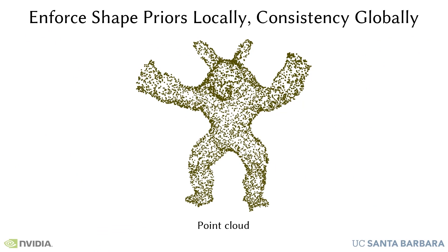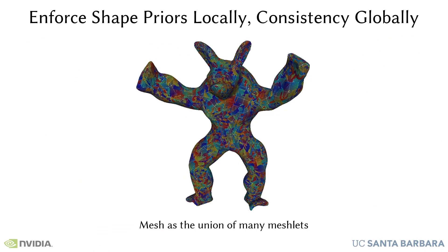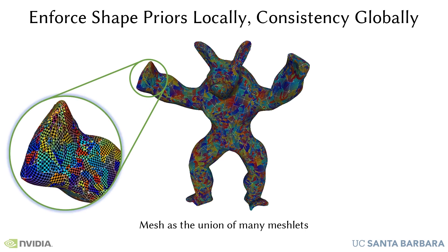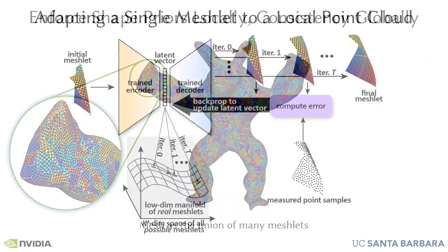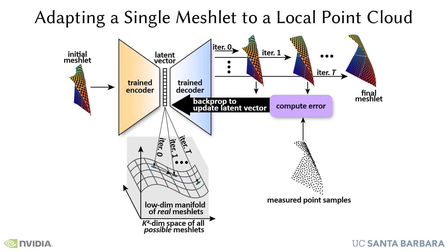To fit a point cloud, our approach takes a set of meshlets and adapts them while maintaining consistency in the overlapping regions. The final mesh is the union of these meshlets. We learn the local shape priors with meshlets using a variational auto-encoder and a very large dataset of meshlets extracted from the objects in the ShapeNet dataset.